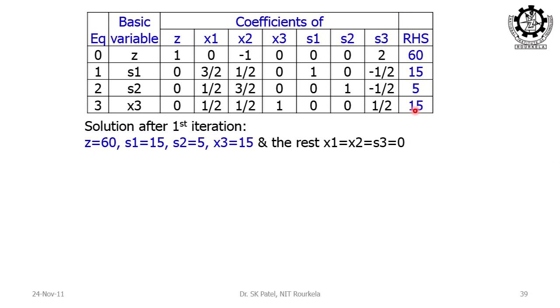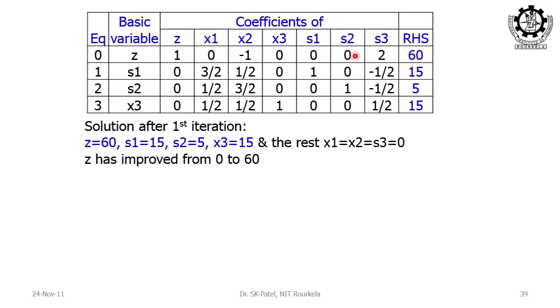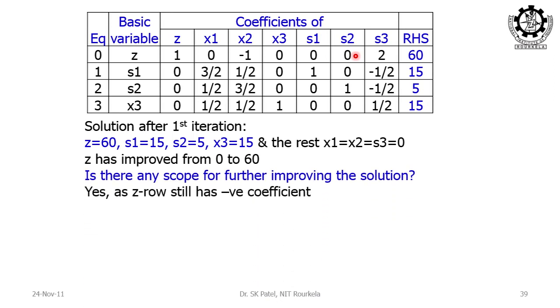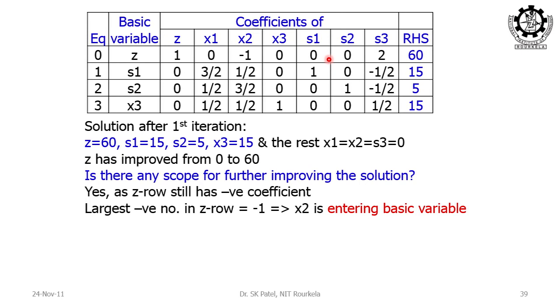Is there further scope of improvement? There are still negative coefficients in the z-th row — specifically −1 — so we cannot stop here; this is not the optimal solution. The only negative coefficient corresponds to x₂, so x₂ will be your next entering basic variable.